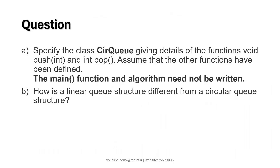We have to specify the class CircularQueue giving details of the functions void push and int pop, assuming the other functions have been defined. The main function and algorithm need not be written, but if you want to run and test the program, you need to include main and all the functions, which is what we'll be doing in this video.